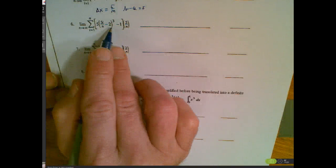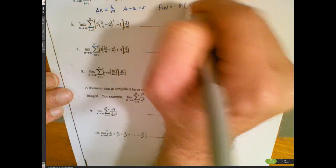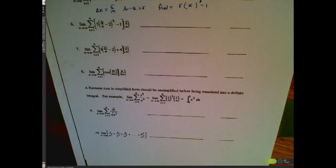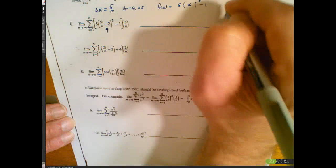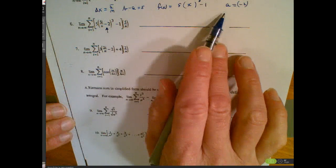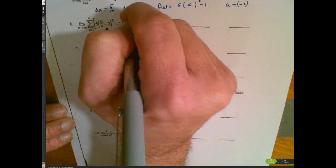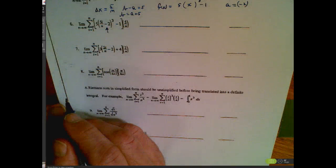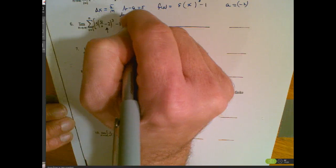Next, my rule looks to be 5 times something cubed minus 1. I'm going to suggest that f(x) = 5x³ - 1, where x is the independent variable. Now I need to find a. Looking inside the expression, I see -2 sitting there, so I think a = -2. Then b = a + 5 = -2 + 5 = 3.